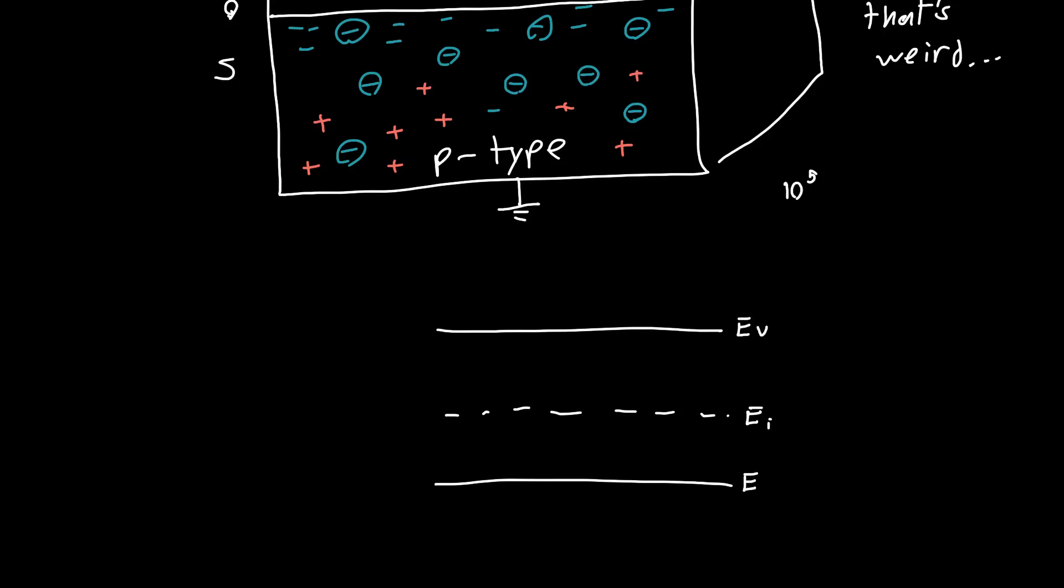So we know that for a p-type semiconductor we've got our intrinsic energy, our valence energy, conduction band up top, valence band down in the bottom. If this is a p-type semiconductor we've got our fermi level closer to the valence band. If we have an n-type semiconductor in contrast the fermi level is going to be much closer to the conduction band.